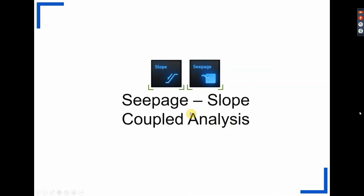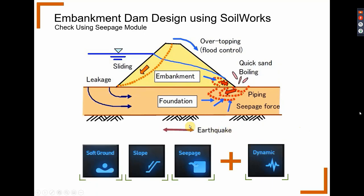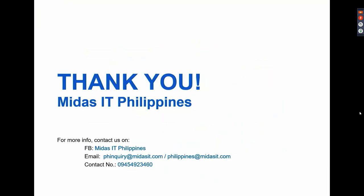That's how you perform the seepage-slope coupled analysis. In summary, you have to use three modules to check for the static consideration of earthquake, rapid drawdown, and stability of the shoulders: soft ground, slope, and seepage. If you want to consider the dynamic effects of earthquake, you may want to try the dynamic module as well in SoilWorks - that would be four out of seven modules in one software. That concludes the presentation. For more questions, contact us on our Facebook page or email us at pageinquiry@midasit.com.